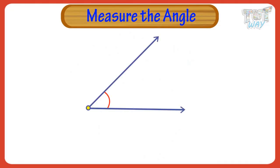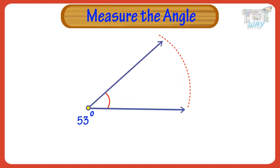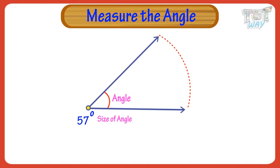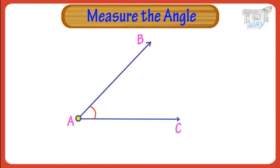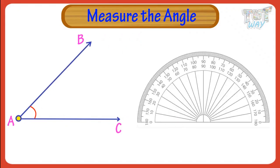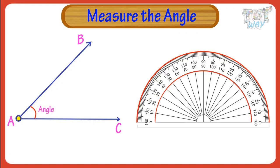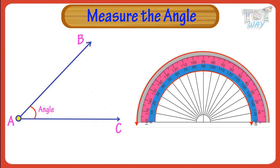Now let's see how we can measure angles. The amount of turn from one arm to the other arm in an angle is called the size of the angle, and we measure it in degrees. The symbol for degree is this. We use a protractor to measure angles. It has two scales marked from 0 to 180 degrees — one from left to right, and the other from right to left. We will see with examples why there are two scales on the protractor.